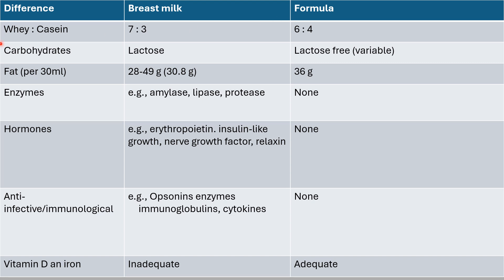Differences between breast milk and formula: whey-to-casein ratio is 7:3 in breast milk and 6:4 in formula (this may vary). Carbohydrates — lactose in breast milk; if soy formula, it will be lactose-free. Fat content per 30 ml averages 30.8 grams in breast milk and 36 grams in formula. Enzymes: breast milk has many enzymes — amylase, lipase, protease — for easier digestion; none of these are in formula.